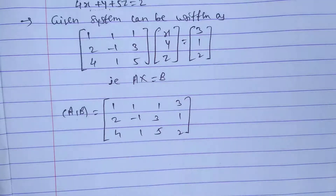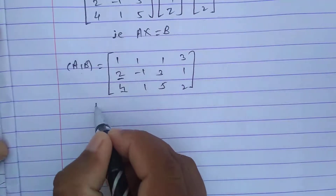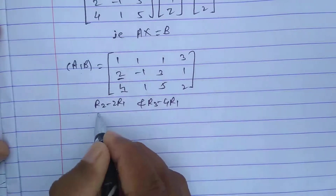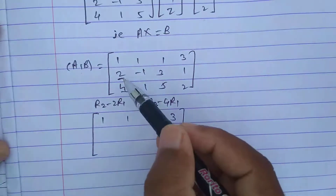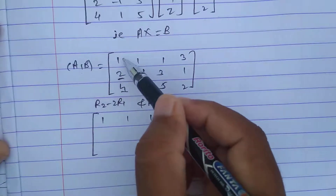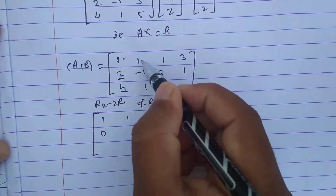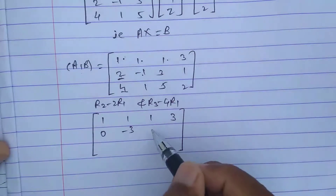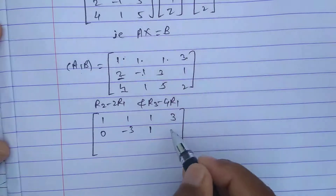To check consistency, we convert this matrix to echelon form using row operations. We apply R2 minus 2 times R1 and R3 minus 4 times R1. The first row stays as it is. For R2 minus 2R1: 2 minus 2 is 0, minus 1 minus 2 is minus 3, 3 minus 2 is 1, and 1 minus 6 is minus 5.